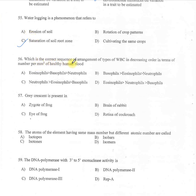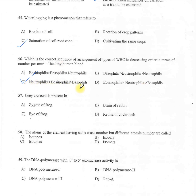Question 56: Which is the correct sequence of WBC types in decreasing order per cubic millimeter of healthy human blood? A: eosinophils, basophils, neutrophils. B: basophils, eosinophils, neutrophils. C: neutrophils, eosinophils, basophils. D: eosinophils, neutrophils, basophils. Option C is correct — neutrophils are highest, followed by eosinophils, and basophils are the least.